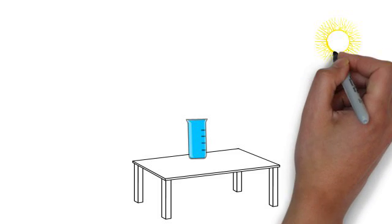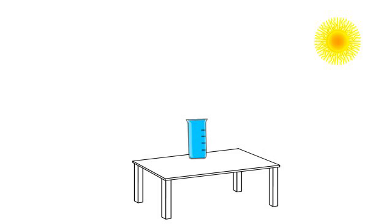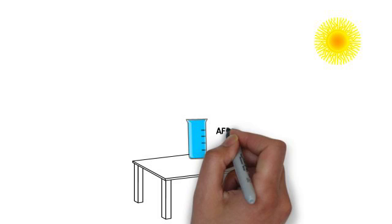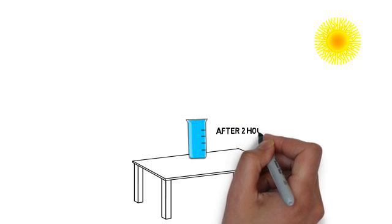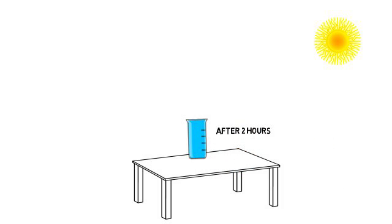We keep a glass of water under the sun, then we mark the level of water in the glass. After two hours, we look at the level of water in the glass again. The level of water has dropped. Where has the water gone?